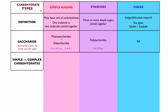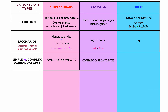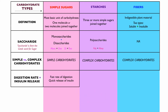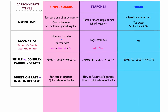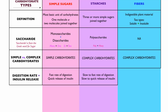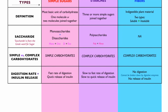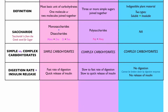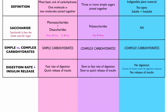Simple versus complex carbohydrates: simple sugars are simple carbohydrates, while starches and fibers are classified as complex carbohydrates. The digestion rate and insulin release for simple sugars is a fast rate of digestion and a quick release of insulin. Starches are in a range of slow to fast, slow to quick, depending on the item. Fibers have no digestion — they cannot be broken down by digestive enzymes, so there is no release of insulin.